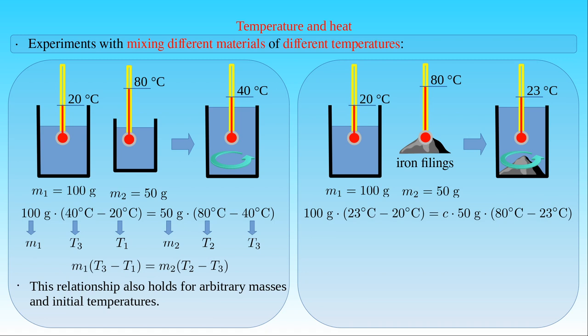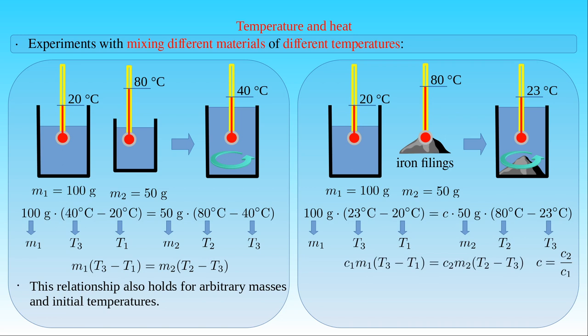Here we can use the following notations: the mass of the water is M1, the temperature of the mixture is T3, the temperature of the cold water is T1, the mass of the iron filings is M2, the temperature of the iron filings is T2, and again, the temperature of the mixture is T3. We also assume that we can write the proportionality constant as the ratio of a constant C2 to a constant C1, where C1 depends only on the physical properties of the water and C2 depends only on the physical properties of the iron filings. Then we obtain the equation: C1 times M1 times (T3 minus T1) equals C2 times M2 times (T2 minus T3).